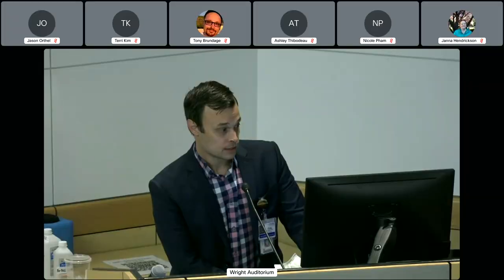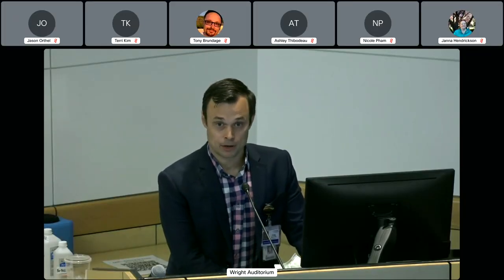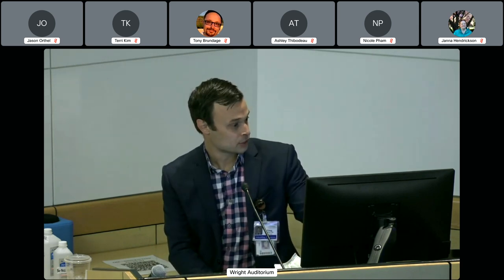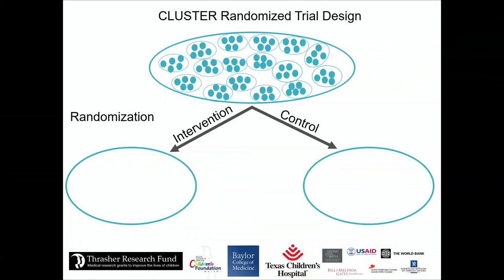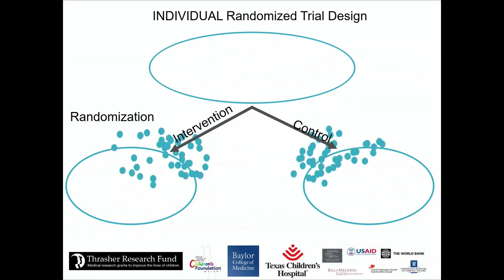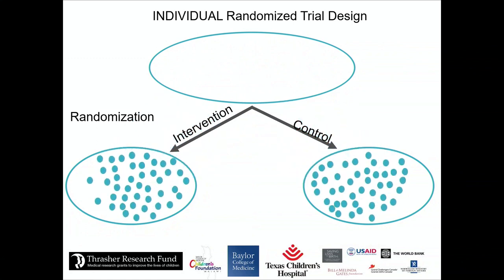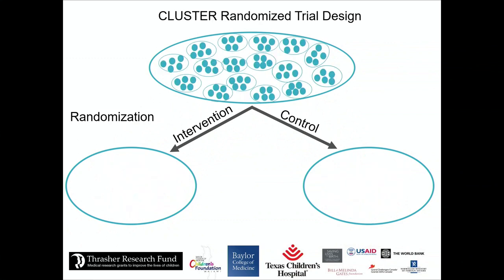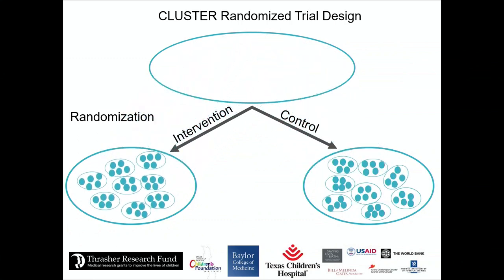On the cluster randomized design: a cluster trial randomizes by health center or district rather than by individual. This is important for nutrition/supplementation research because if one participant has chewing gum and another in the same household doesn't, sharing would reduce dosing and introduce contamination between arms. A cluster design prevents this contamination and also improves external validity by enrolling across multiple health centers.